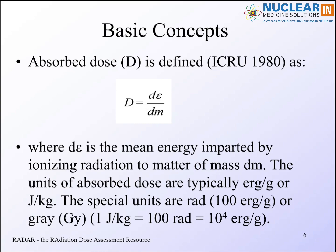What is absorbed dose? The strict definition is from the International Committee on Radiation Units and Measurements, ICRU. They define dose as dε/dm, where dε is the mean energy imparted by ionizing radiation to matter of mass dm. It's just energy per unit mass. The units of absorbed dose are energy per unit mass — erg per gram or joule per kilogram. The special units are the rad, which is 100 ergs per gram, or the gray in the SI system. A gray is one joule per kilogram, and one gray equals 100 rad.